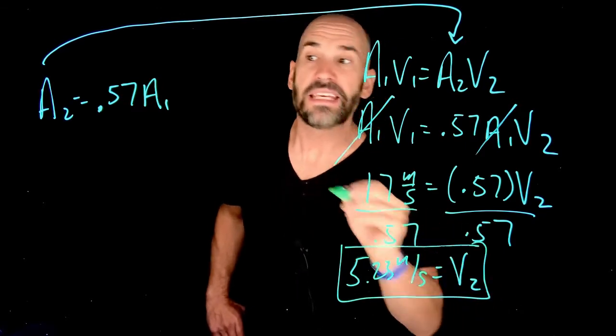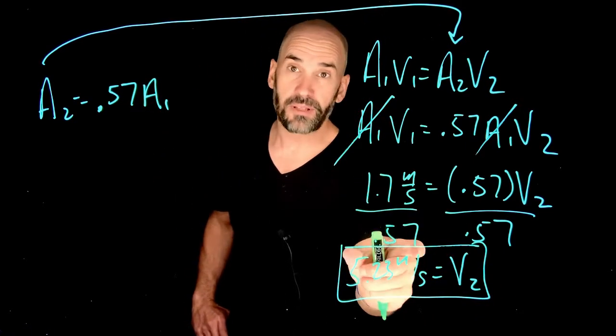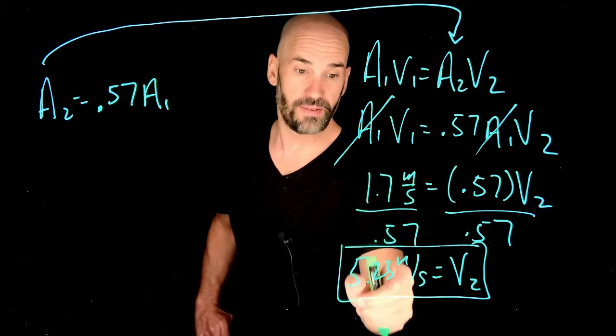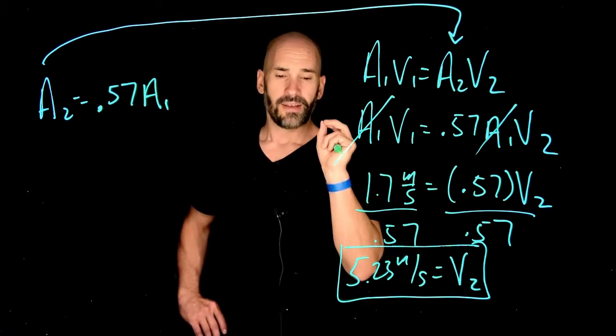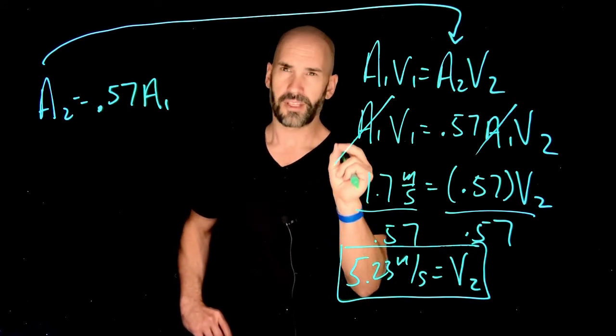So you see, by even having a partially clogged artery, the speed of the blood flow in that artery goes from 1.7 to 5.23 meters per second. I am not a clinically trained doctor, but I'm guessing that's probably not healthy.